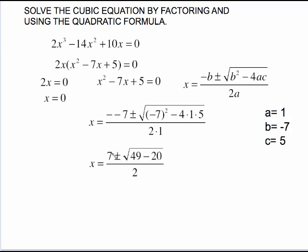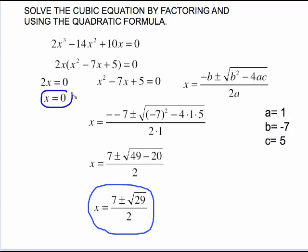Clean this up. We get a positive 7. Negative 7 squared is 49. 4 times 5 times 1 is 20. Finish out the arithmetic and we get this. Now we have these two answers and we have this answer we found earlier for a total of three solutions and that's our x cubed which verifies we have found the right number of solutions.